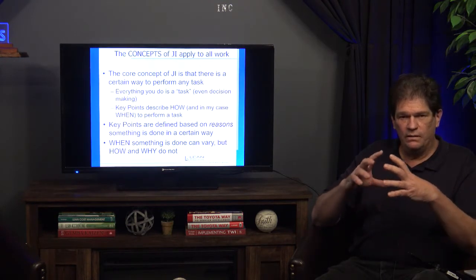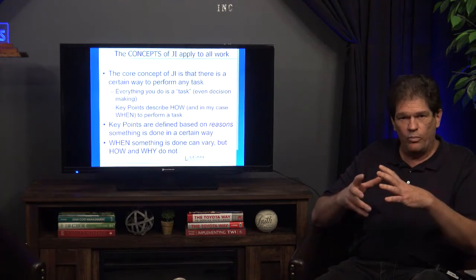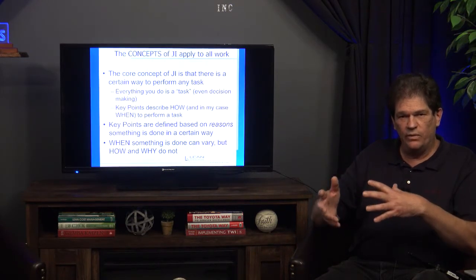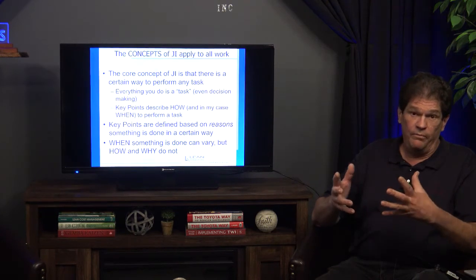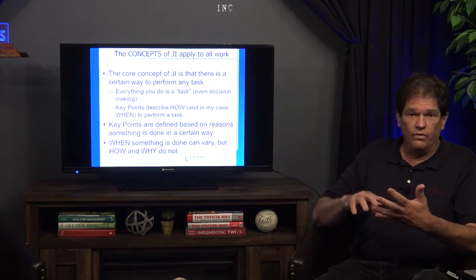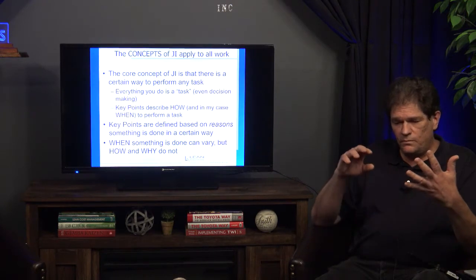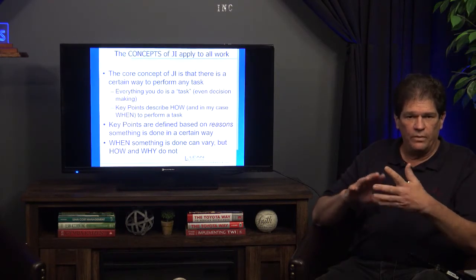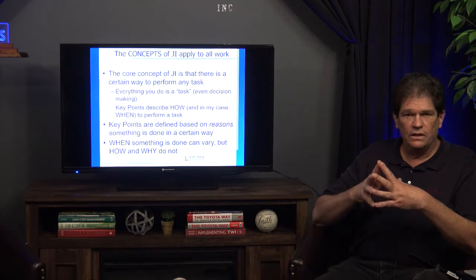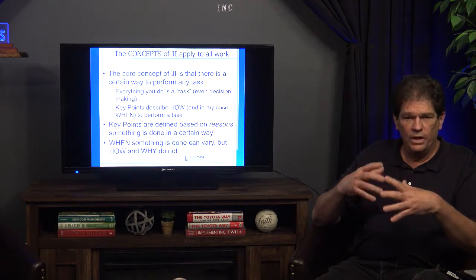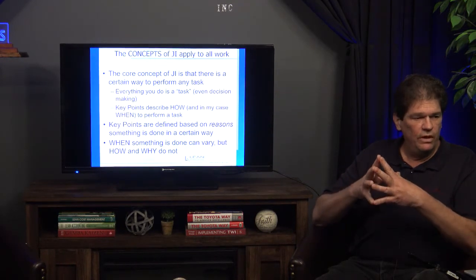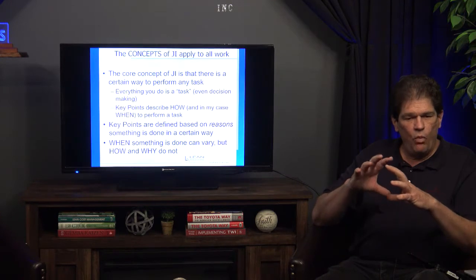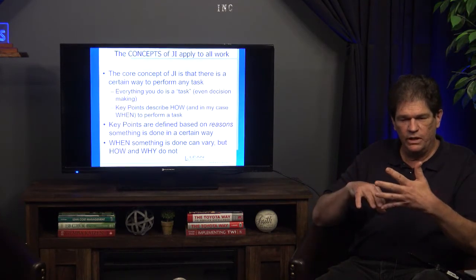The core concepts of job instruction apply to any type of work task — whether a thinking process or a manual process. The core idea is to identify those key points that, as we were taught, make or break the job. I start with the reason we do a certain thing, and from past experience say the reason is to avoid a known mistake or to do things more effectively, and I'm going to show you a decision matrix to determine what makes the most sense.